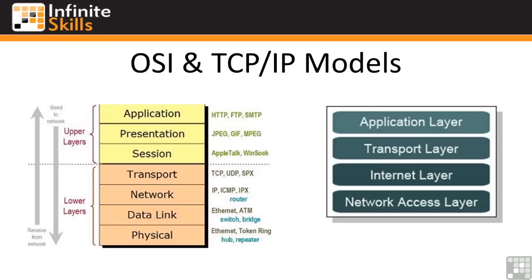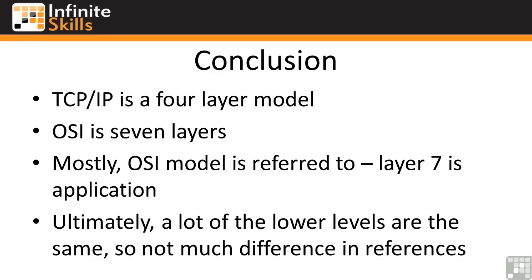You'll often hear people talking about layers in network conversations. A layer two problem relates to something like a switch — if someone mentions a switch and says 'layer two,' they're talking about the data link layer. If they're talking about a router problem and say 'that's a layer three thing,' they mean the network layer. That's why we talk about the OSI model — not only to understand the different functions and how they interact, but also as a shorthand for which set of functionality we're discussing.